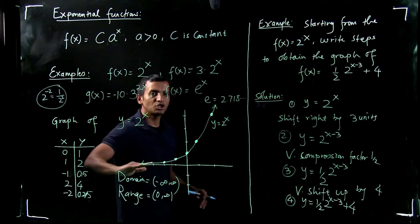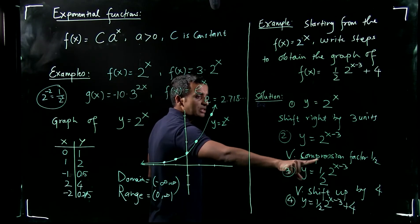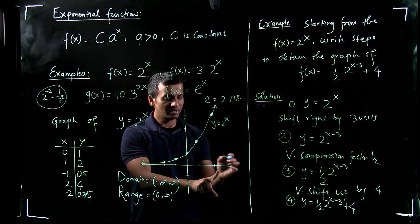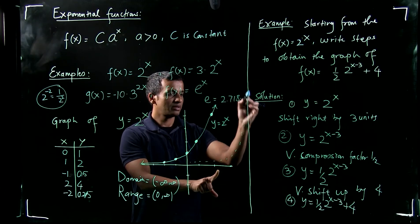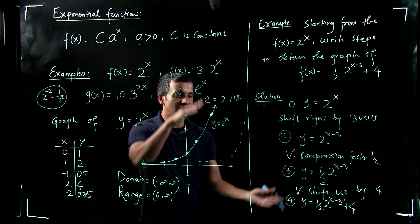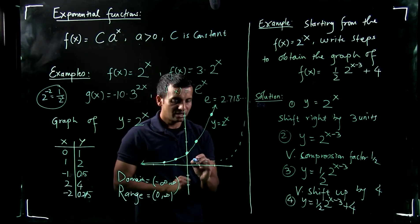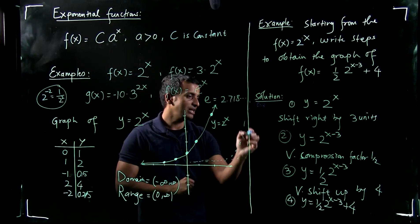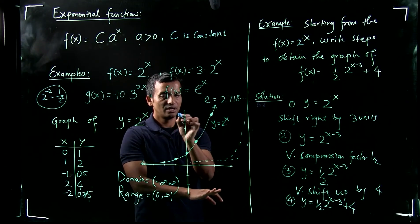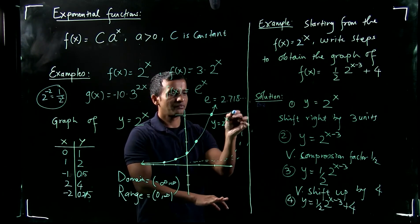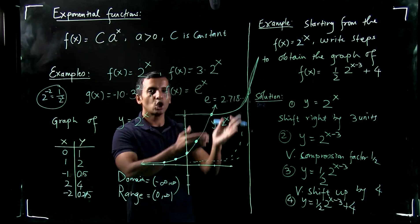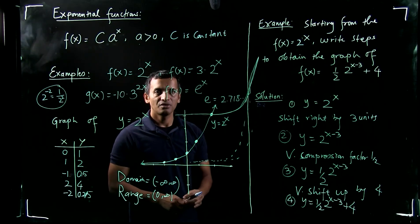Starting from the graph of y equals 2 to the x, first shift right by 3 units, then apply vertical compression by one half so it looks flatter, and then shift up by 4 units. The final graph will look like the shifted and compressed version of the original. Thank you.